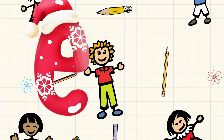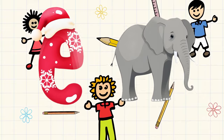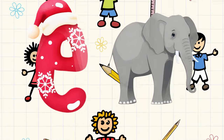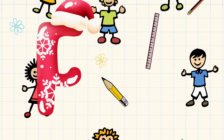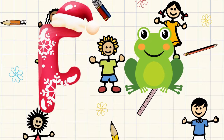E is for elephant, e-e-elephant. F is for frog, f-f-frog.